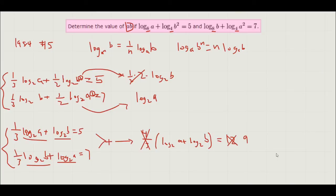So now we see log base 2 of a plus log base 2 of b. And we recognize that we can use the property log base a of b plus log base a of c equals log base a of b times c. So this turns into log base 2 of a times b, and this equals 9.